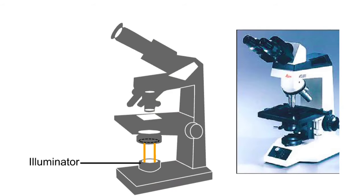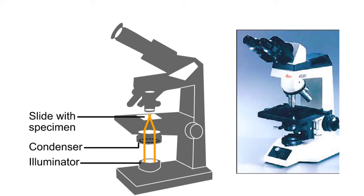An illuminator in the base of the microscope acts as the light source. The light passes through a condenser, which focuses the beams on the specimen.